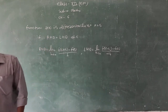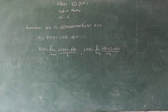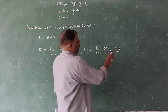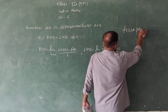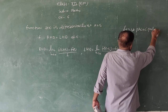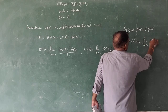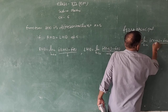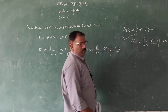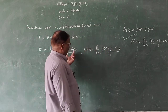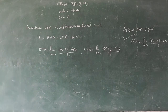If we need to find the right-hand derivative or left-hand derivative at a particular point, we use the formula directly. Otherwise, it becomes a first principles problem. If we differentiate at a general point x, then by first principles we get f'(x). First principles is the method for differentiability — find both right and left derivatives, and if both are equal, the function is differentiable.